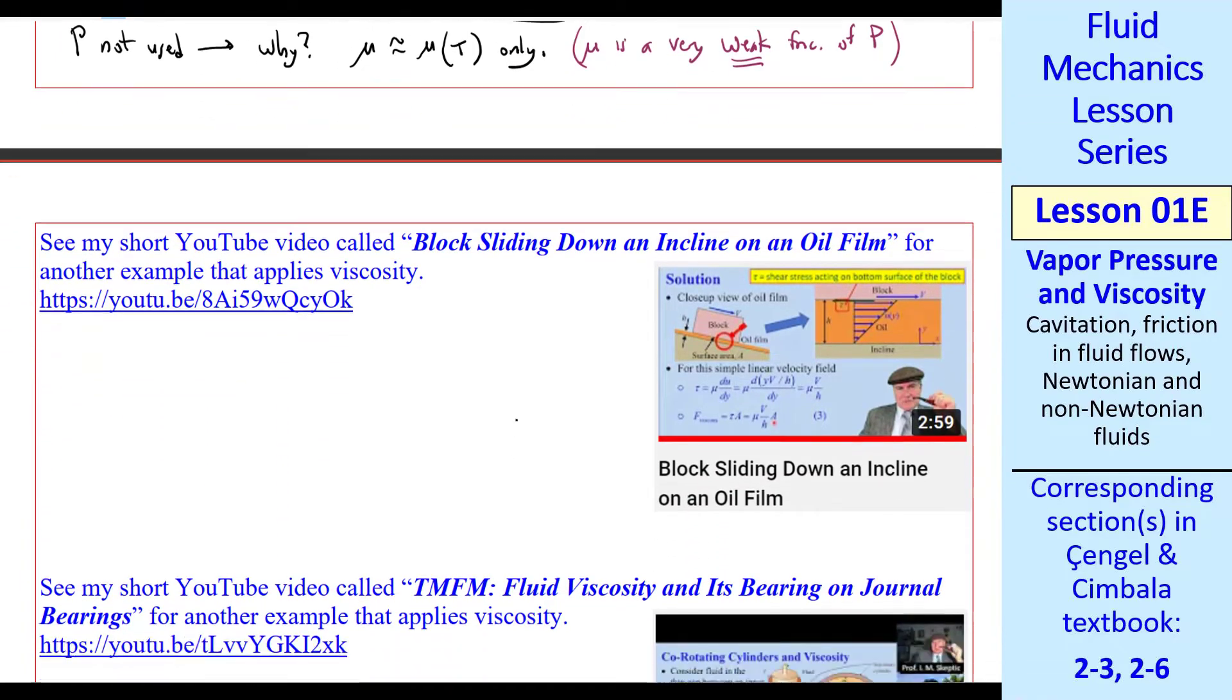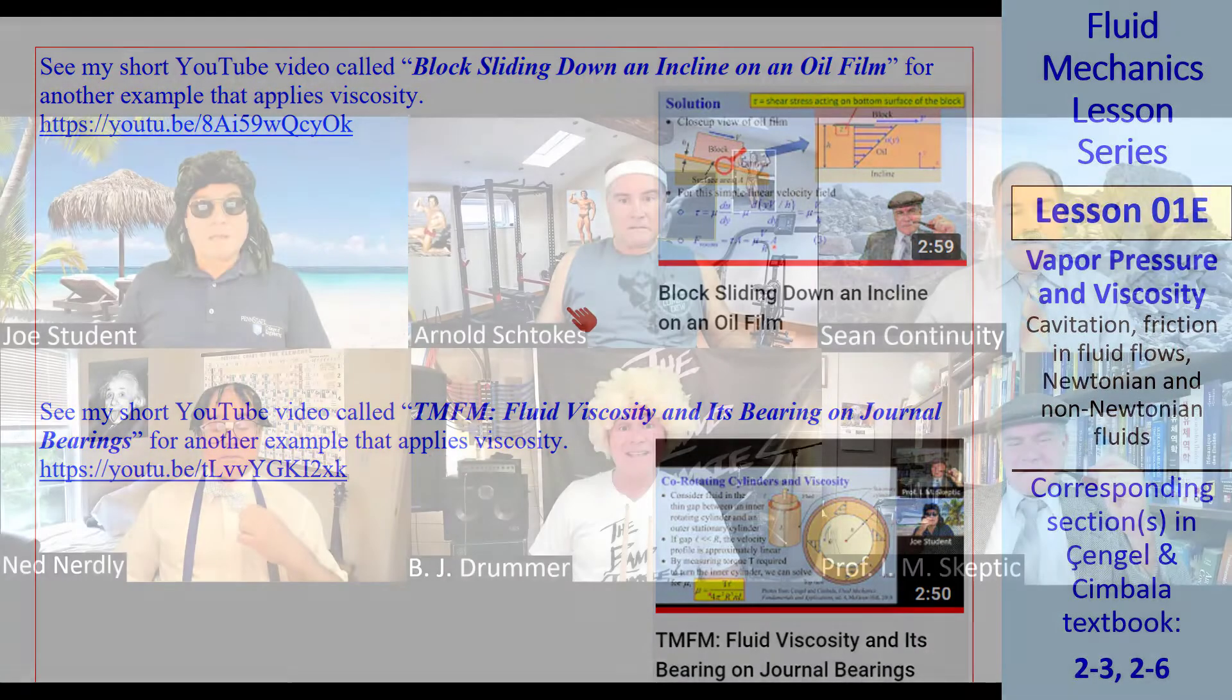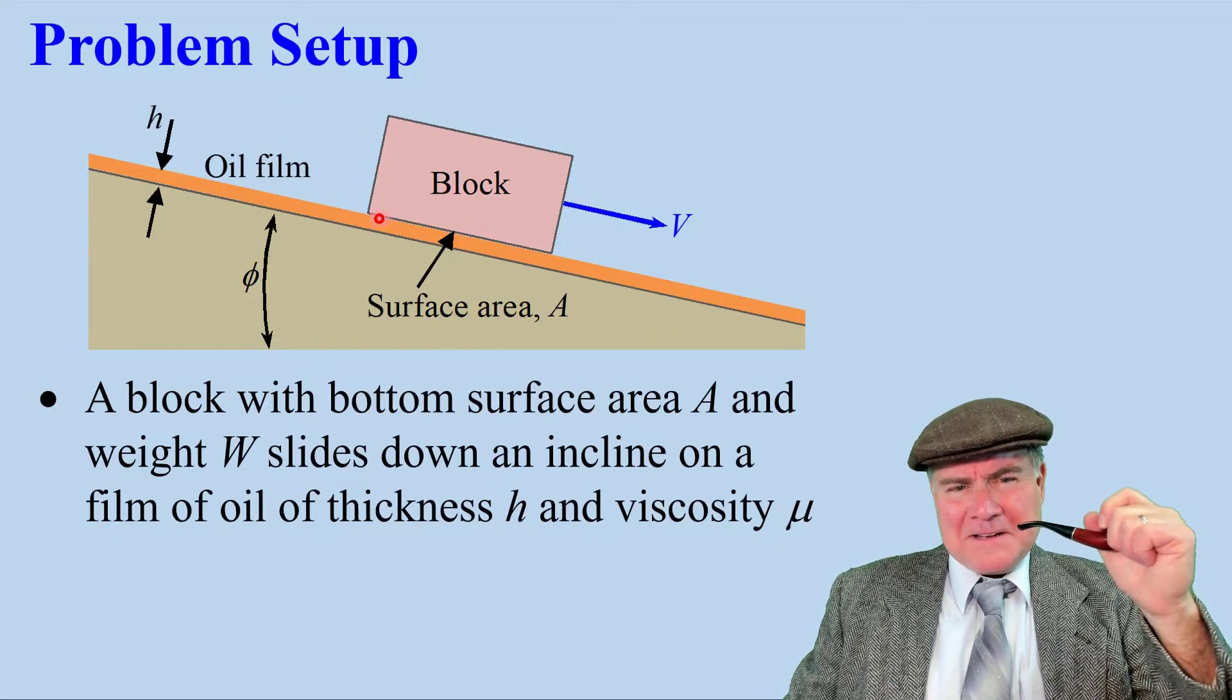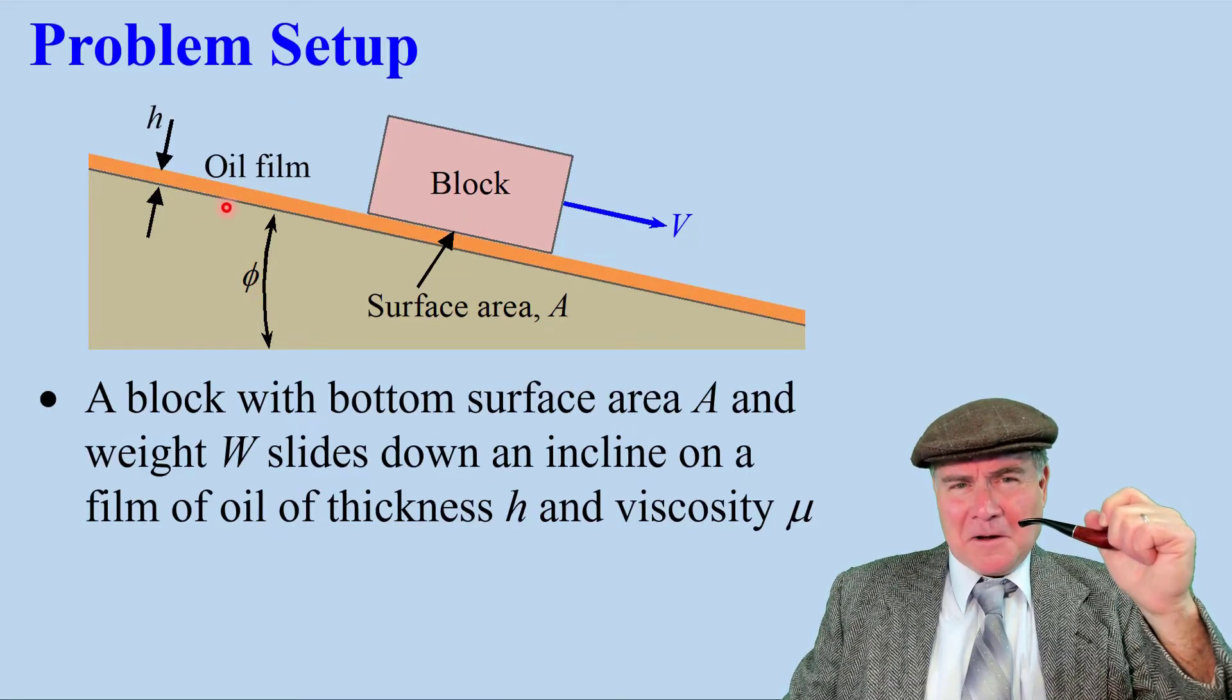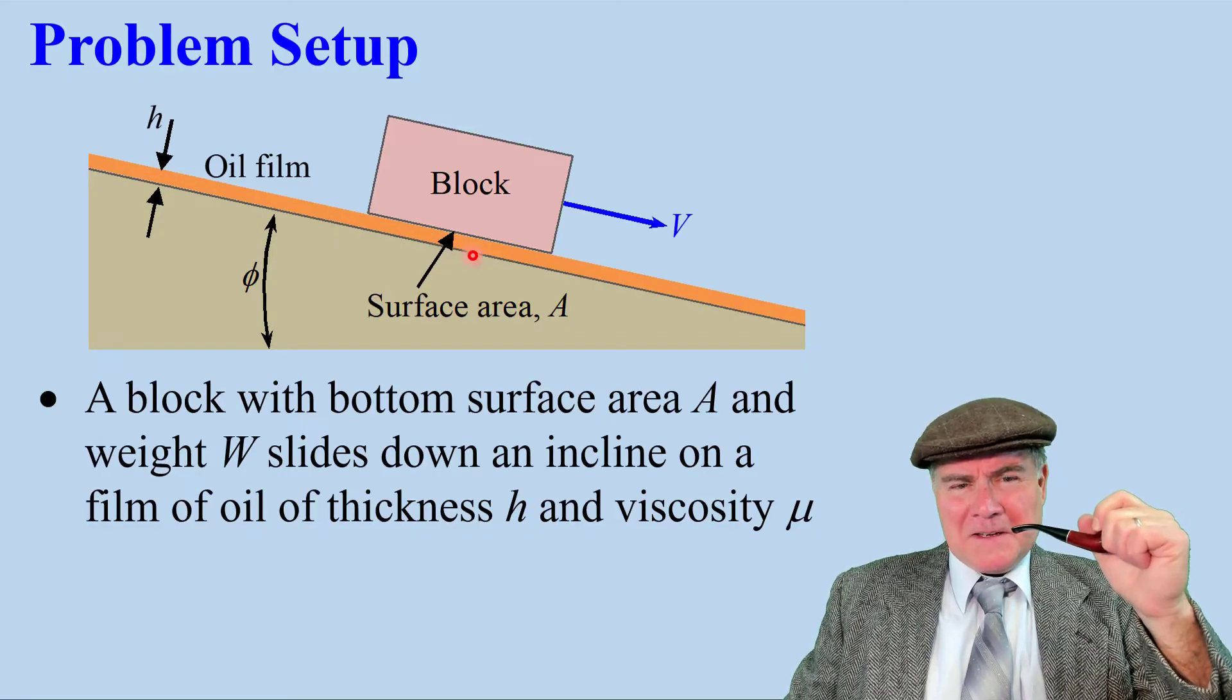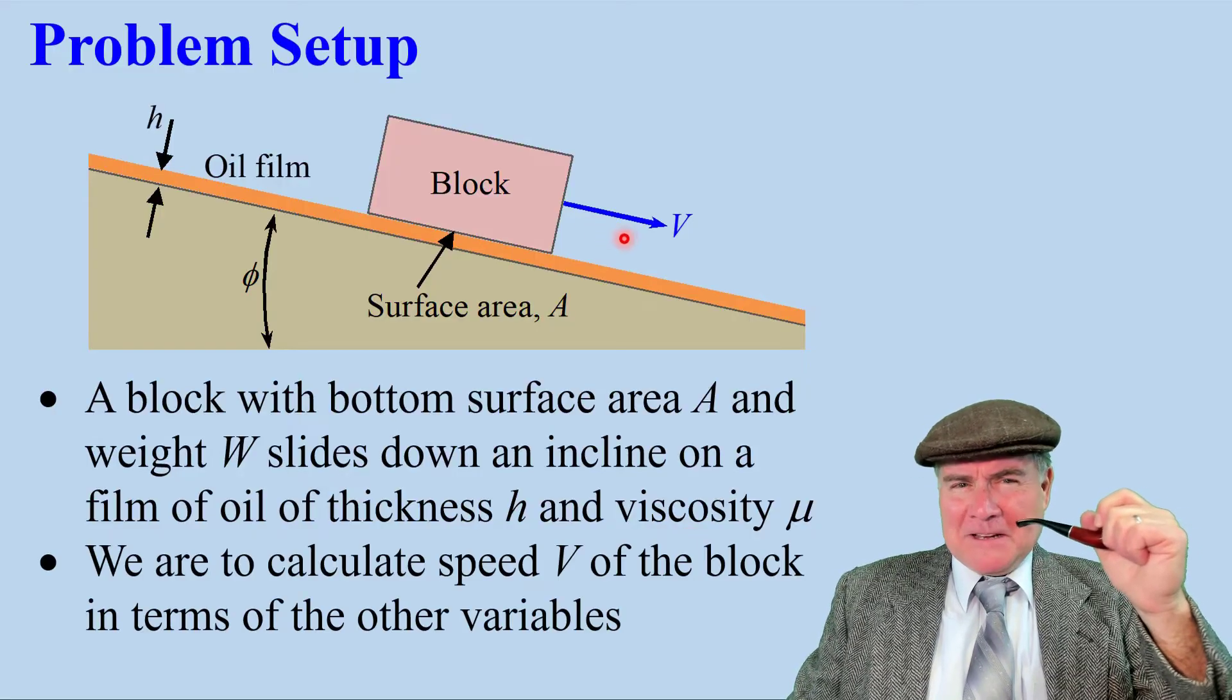I do an example with viscosity in a YouTube video called Block Sliding Down an Incline on an Oil Film. I'll show portions of that now. I'll share a video about this. Here's the problem setup. We have a block sliding down an incline of angle phi along an oil film of thickness H. The surface area of the bottom of the block is A in contact with the oil. Oil viscosity is mu. We are to calculate the speed V of the block.